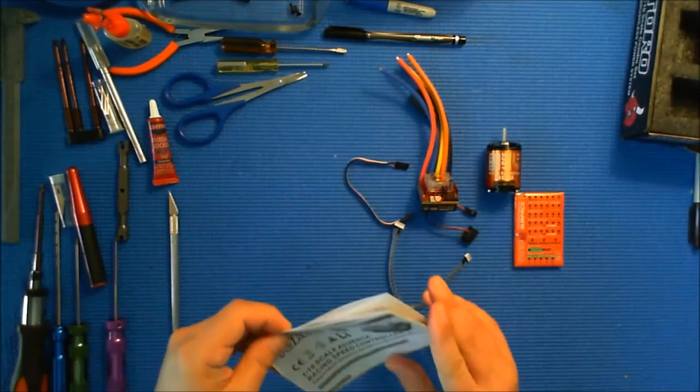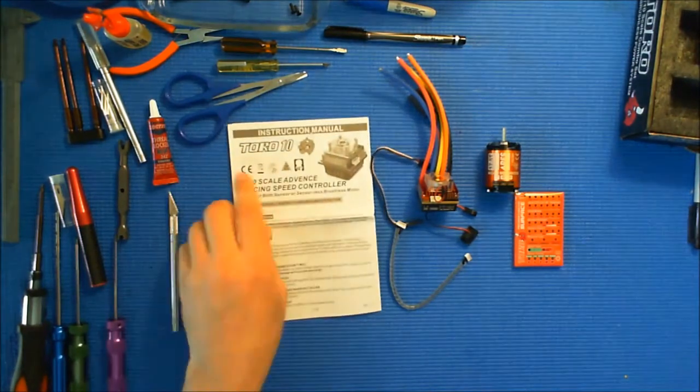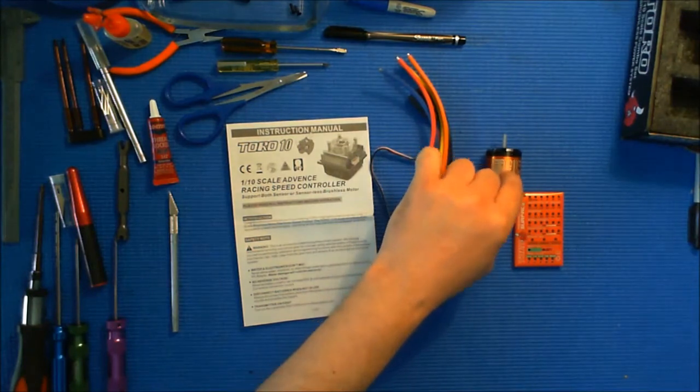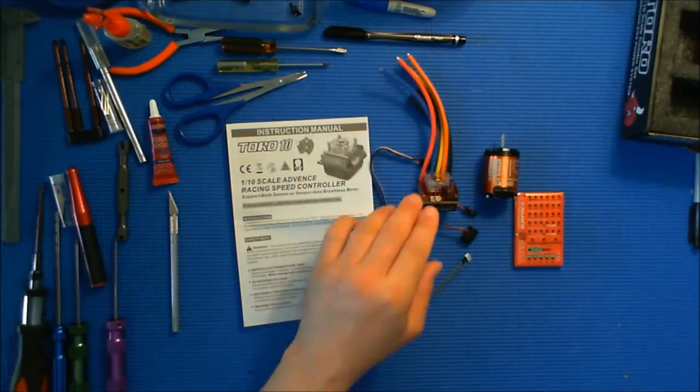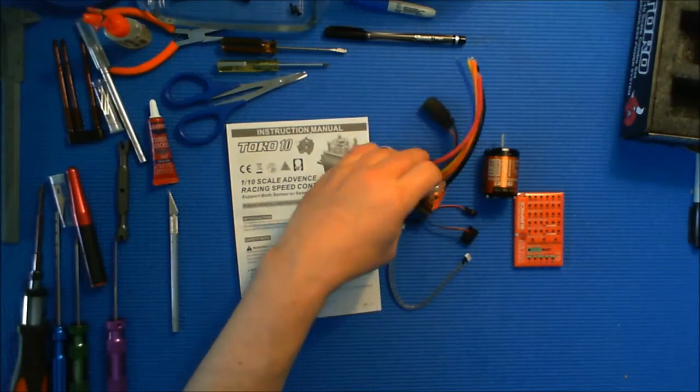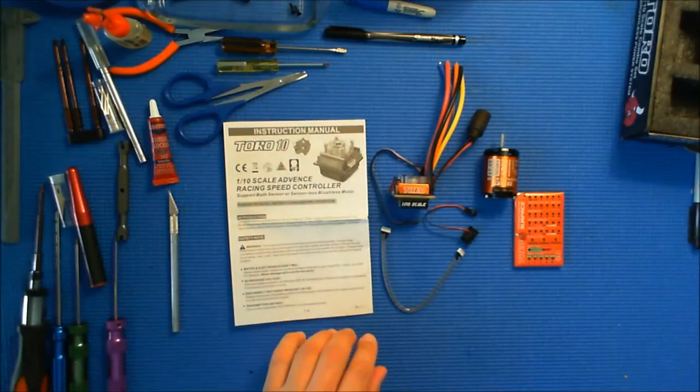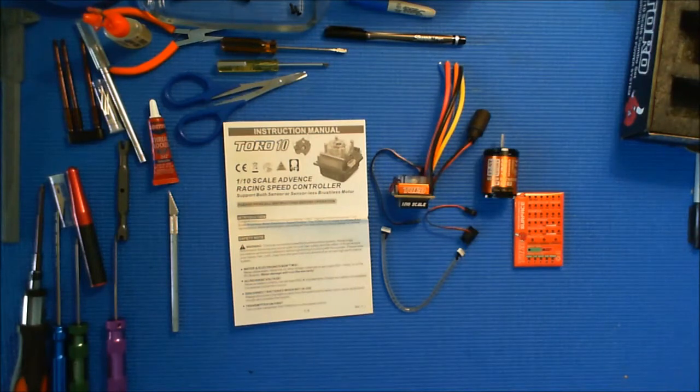Let me give you some specifics on this motor and speed controller. The motor is limited to 2 cell lipos, which is fine because that's what the car is limited to. The speed controller, this model speed controller, can handle up to a 3S lipo.